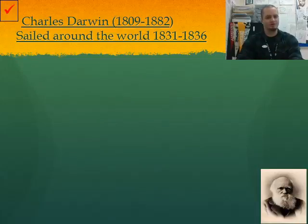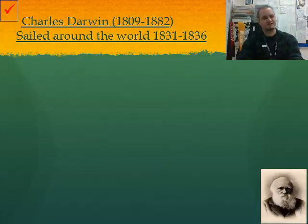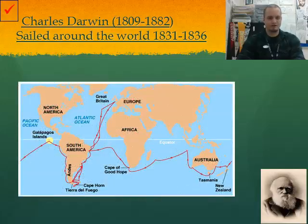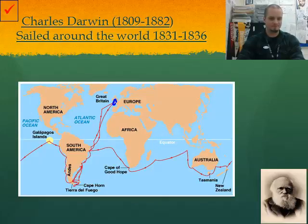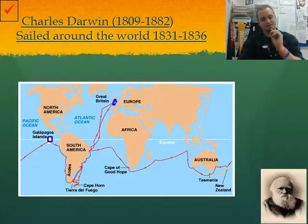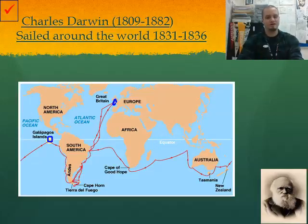Charles Darwin was born in about 1809 and died in about 1882. From the years of 1831 to 1836, he sailed around the world. He started off in Britain, went down to South America, looped around, and ended up at a place called the Galapagos Islands. The Galapagos Islands are very important because Darwin made most of his discoveries that led to the creation of the theory of natural selection on these islands.